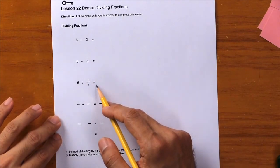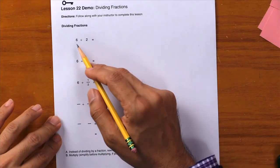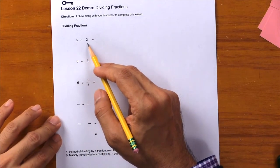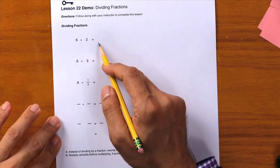The first one is six divided by two. We already know the answer to that, but let's model it first so that we can understand the logic behind the lesson.